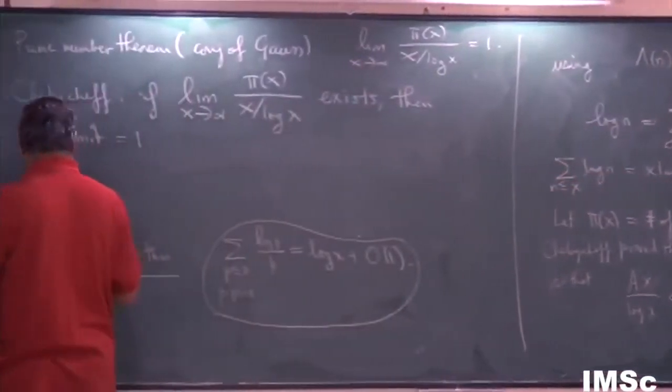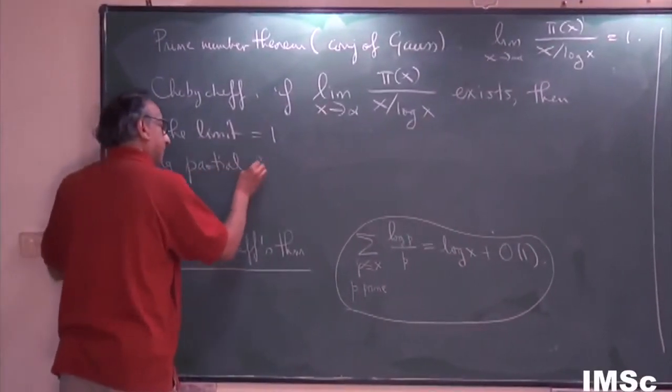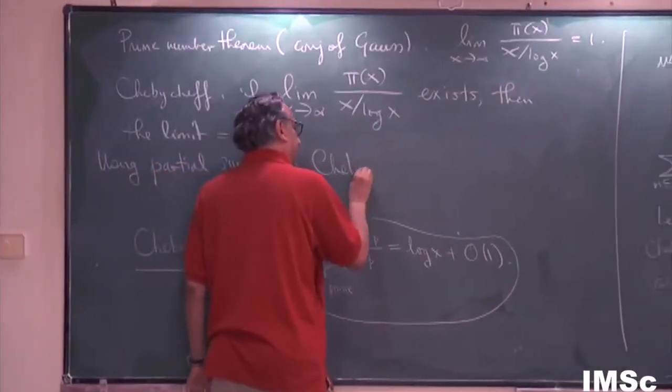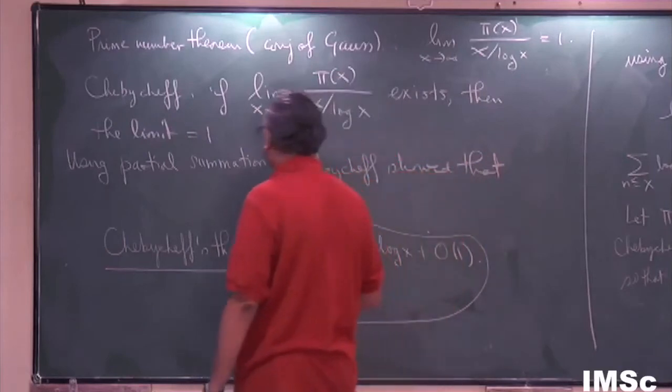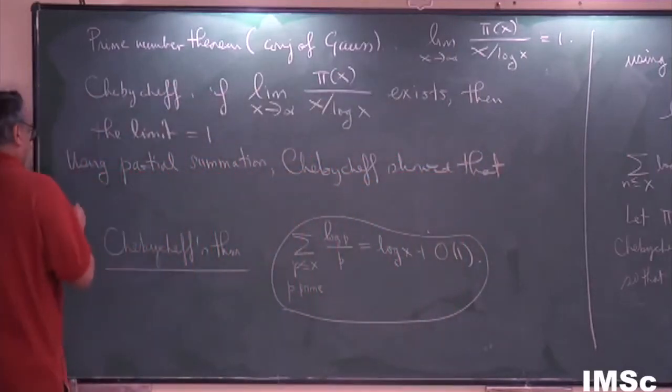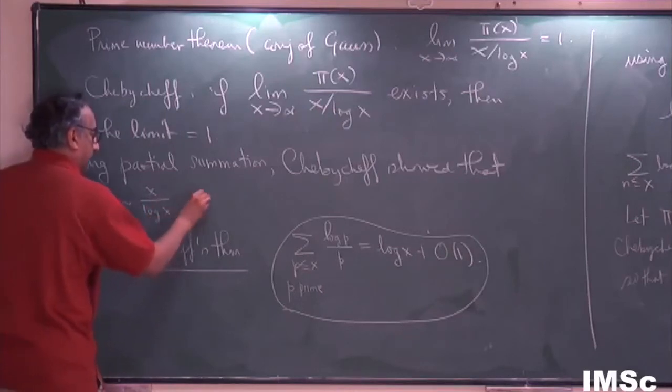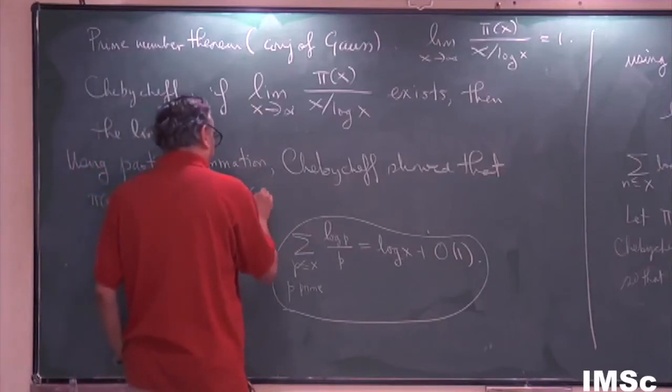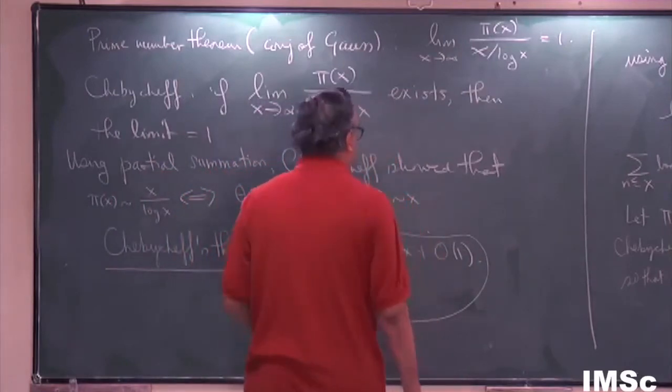So what he first showed was using Abel's Lemma or using partial summation, Chebyshev showed that the study of π(x) being asymptotic to x over log x is completely equivalent to saying θ(x) is asymptotic to x, which is completely equivalent to saying ψ(x) is asymptotic to x. Where, what are these functions?